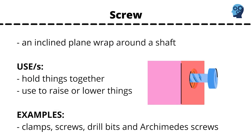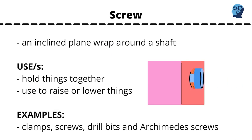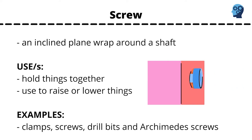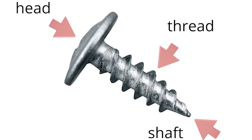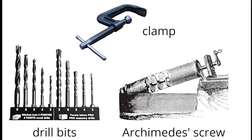Screw. An inclined plane wrapped around the shaft, used to hold things together using circular motion to raise or lower things. This spiral ridge wrapped around the cylindrical body is called a thread. Clamps, screws, drill bits, and the Archimedes screw are examples of this.